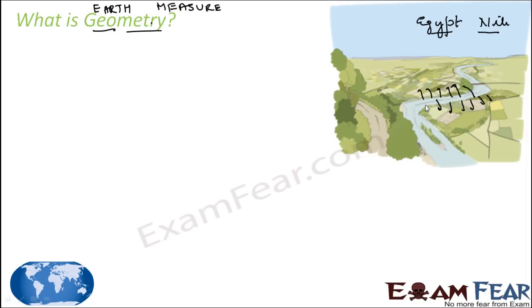After the flood was over, these boundaries had to be redrawn, but you don't know what the earlier boundary was. So it was a difficult task, and thus the Egyptians developed a technique — the technique of geometry. They developed rules for calculating simple areas and simple constructions, such as squares, rectangles, and triangles. They could find the area of these different land shapes.